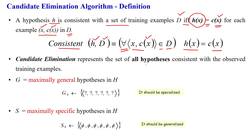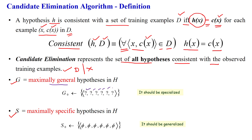The algorithm provides the set of all hypotheses consistent with the observed training examples in dataset D or instance space X. Initially, it considers two boundaries: the general boundary and the specific boundary. The general boundary starts with a maximally general hypothesis where all attribute values are represented with the most general constraint — the question mark symbol — and this must be decreased into a more specialized hypothesis.